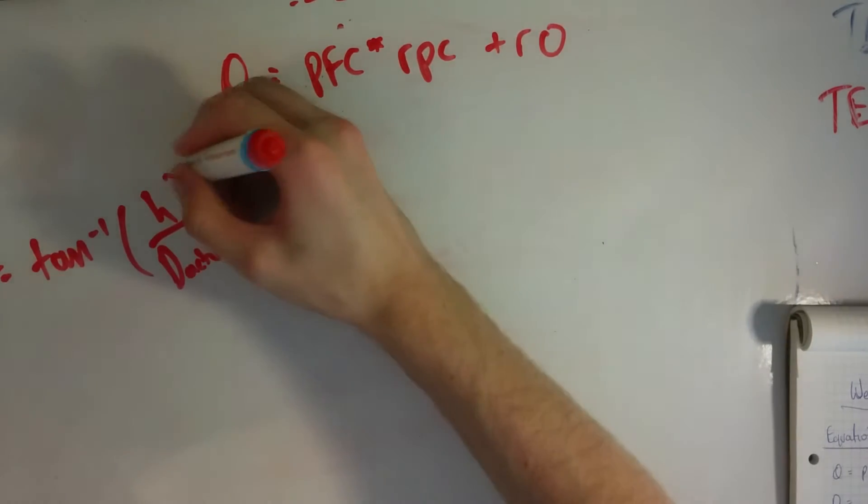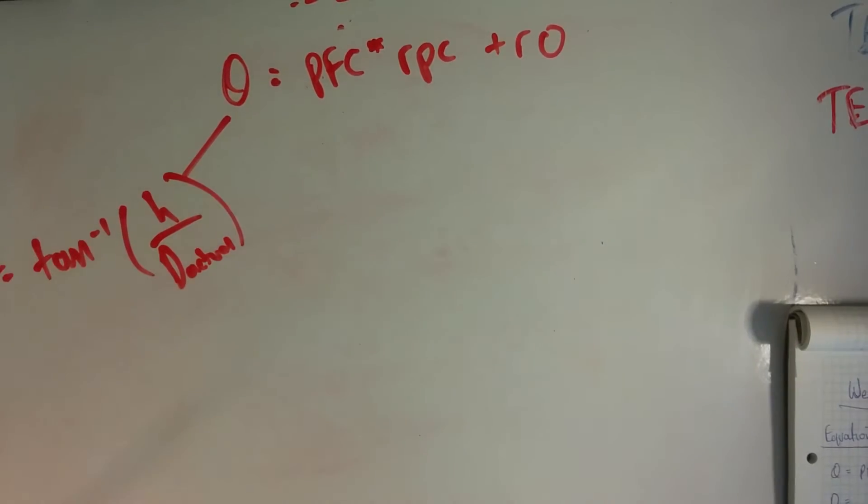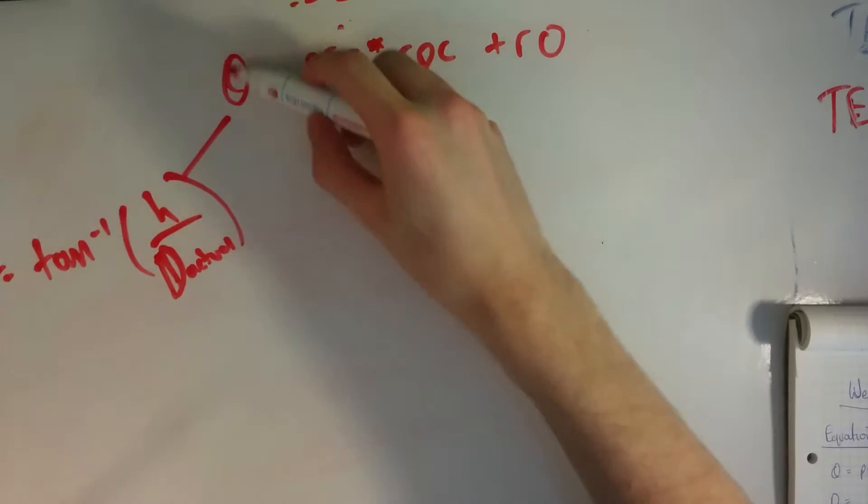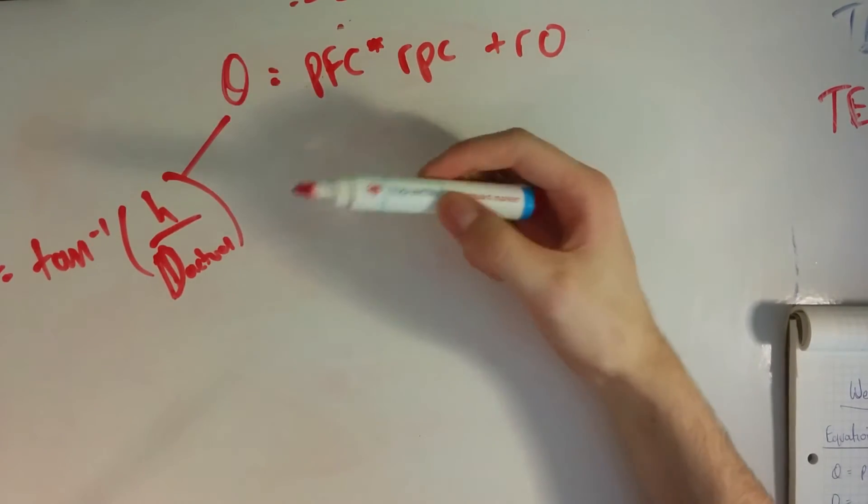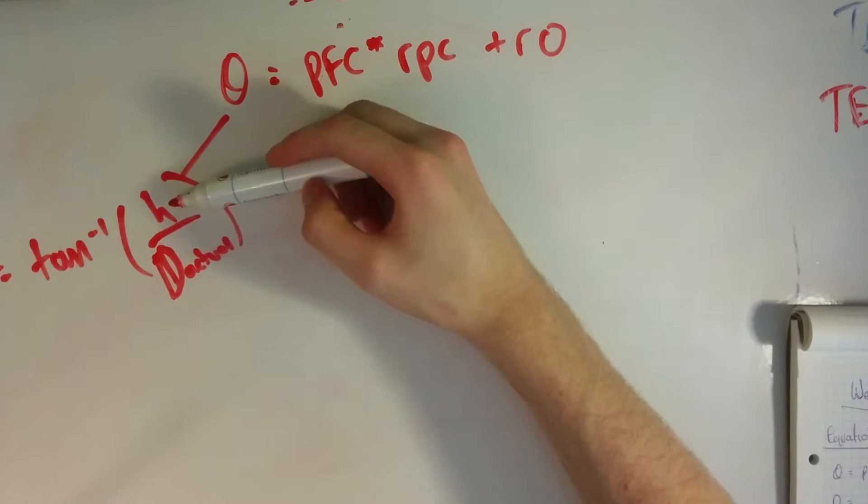And then the point is theta becomes these two things that are just real world values. Like h is our set value of the distance between the webcam and the laser, and d we measured with a measuring tape.